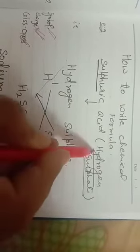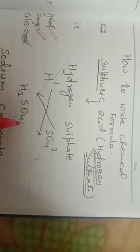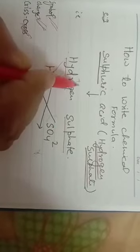If we have to write the formula of sulfuric acid, the chemical name of sulfuric acid is hydrogen sulfate. As I already discussed, all the chemical compounds have two parts in their name: first is positive radical and the other is negative radical.